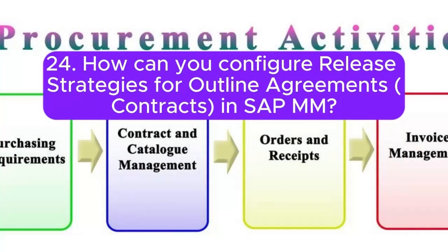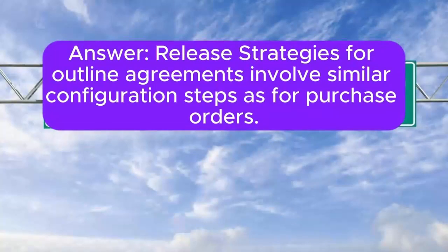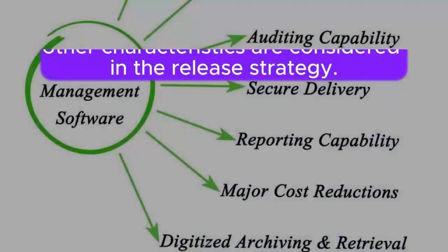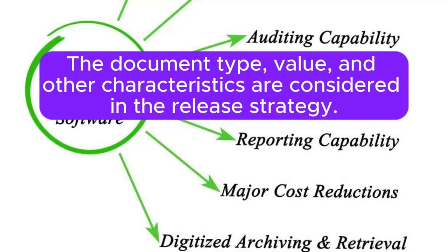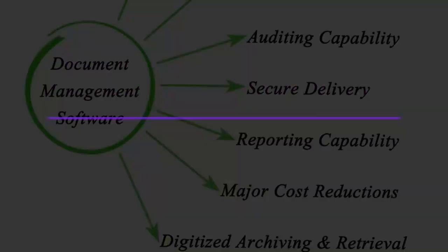Question 24: How can you configure release strategies for outline agreements and contracts in SAP MM? Answer: Release strategies for outline agreements involve similar configuration steps as for purchase orders. The document type, value, and other characteristics are considered in the release strategy.